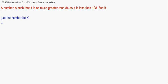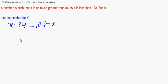The number x is greater than 84, so how much greater? It is x minus 84. It is also less than 108, and how much less than 108 is 108 minus x. The problem says it is as much greater than 84 as it is less than 108, so these two expressions are equated: x minus 84 equals 108 minus x.